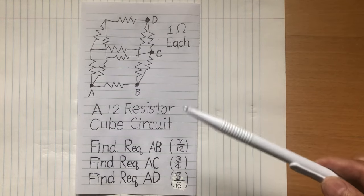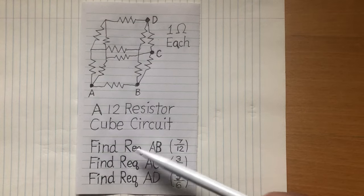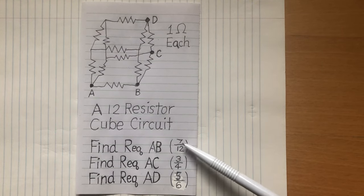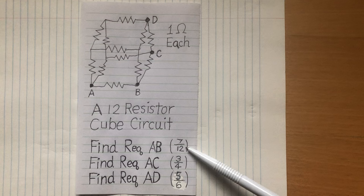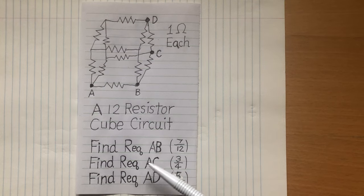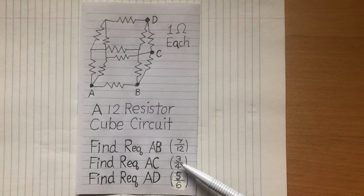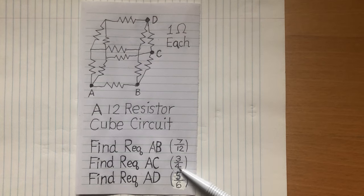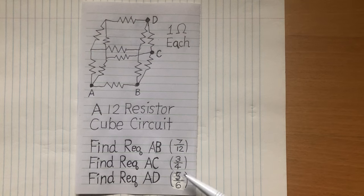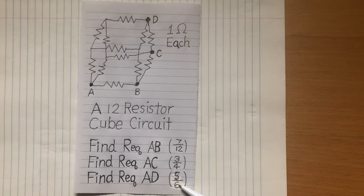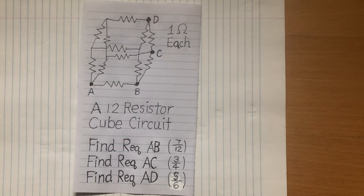I have the answer there. The answer for this is 7 over 12 ohms. The answer to resistance AC is 3 over 4 ohms. And the answer to AD is 5 over 6 ohms.